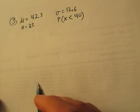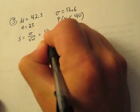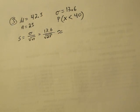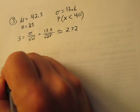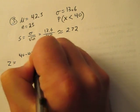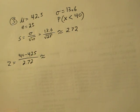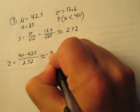So first thing we should do is find our sample standard deviation, which in this case is 13.6 divided by the square root of 25, which equals 2.72. Now we can use our z-score. We get a z-score of about negative 0.92.